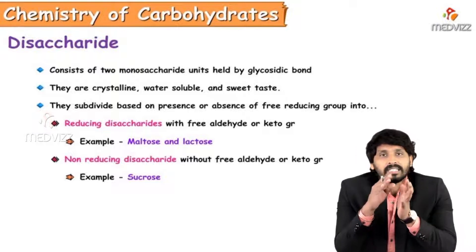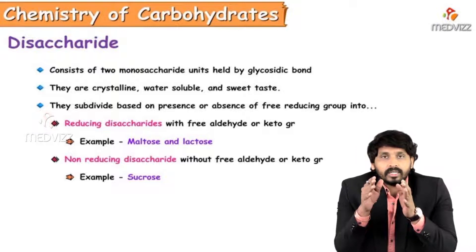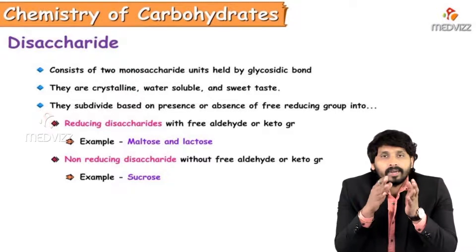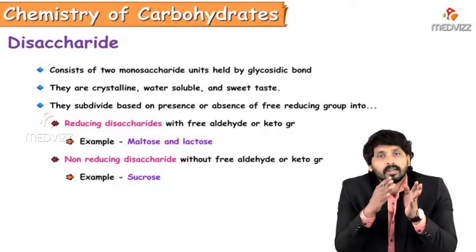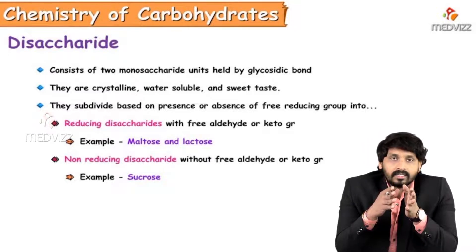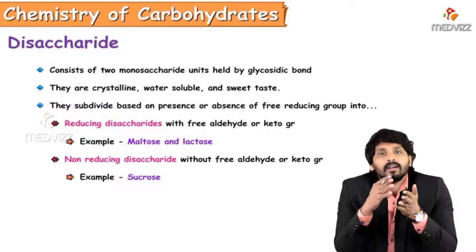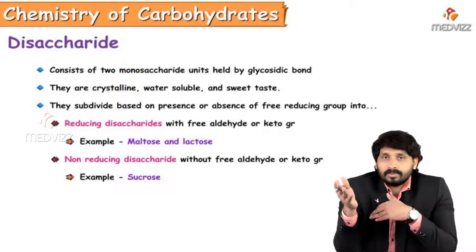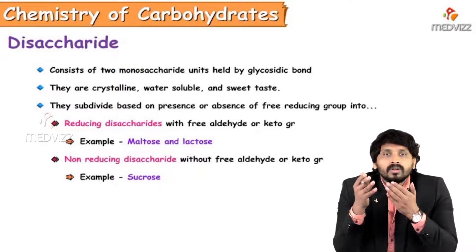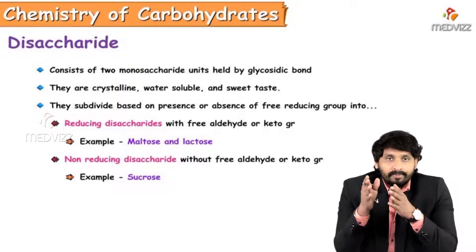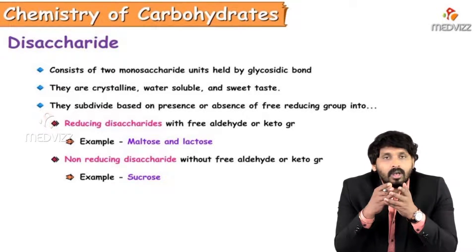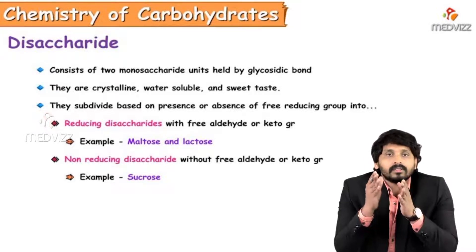Based on the presence or absence of reducing group in the structure, disaccharides again divided into two types, reducing disaccharides and non-reducing disaccharides. Reducing disaccharides will be having free aldehyde or keto group to react with chemical substances. Examples are maltose and lactose.